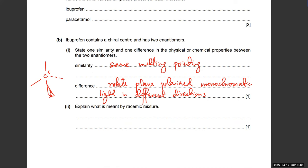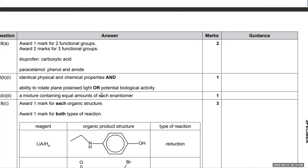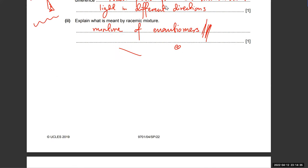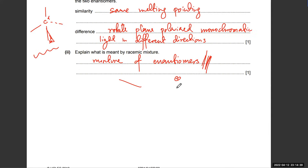A racemic mixture is a mixture of enantiomers in equal amounts. Because equal and opposite rotations of plane-polarized light cancel out, a racemic mixture shows no net optical activity.